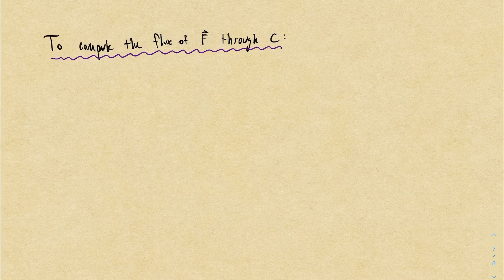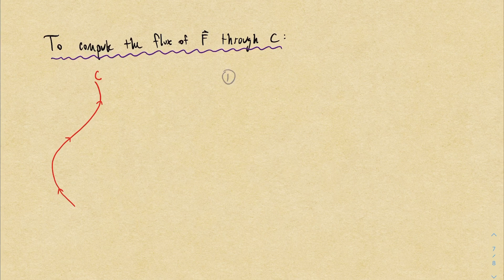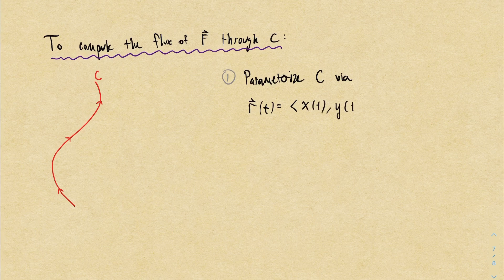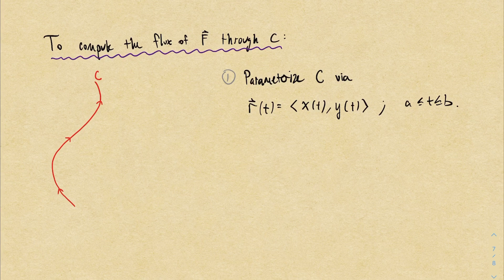So as usual, before we do an example, I just want to remind you how to compute this. As with any kind of line integral, your first step is to parameterize the curve. So this will involve writing down an x and a y component in terms of t and a parameter domain for t from a to b.